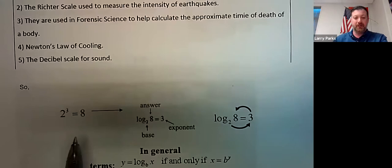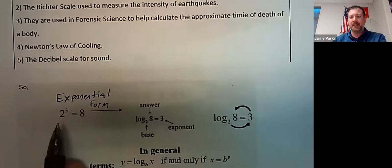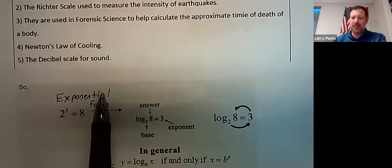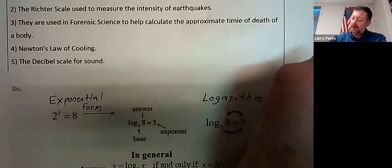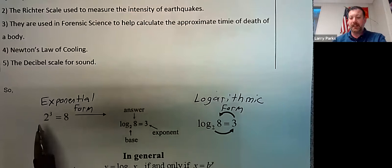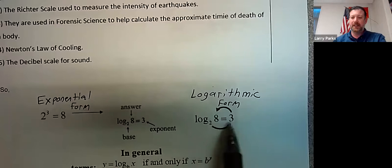We call the equation 2³ = 8 the exponential form. If you go from exponential form to logarithmic form, you would express the same relationship — two to the power of three is eight — written as log base 2 of 8 equals 3. The base of the exponential becomes the base of the logarithm, and the exponent appears on the right side.